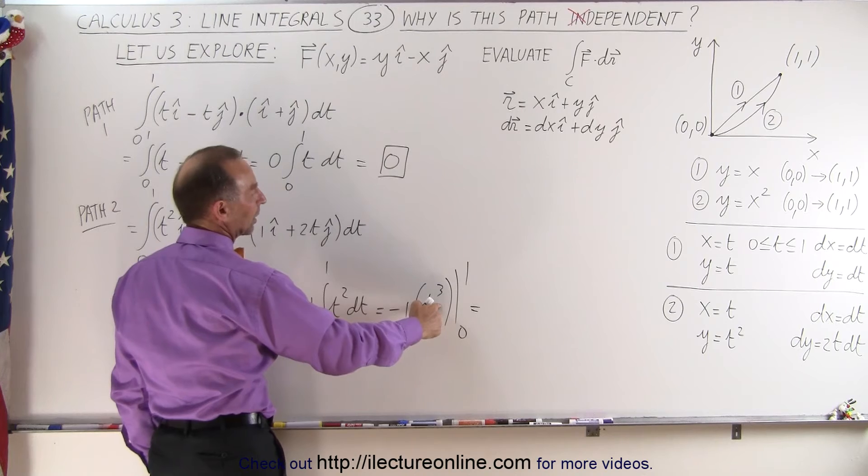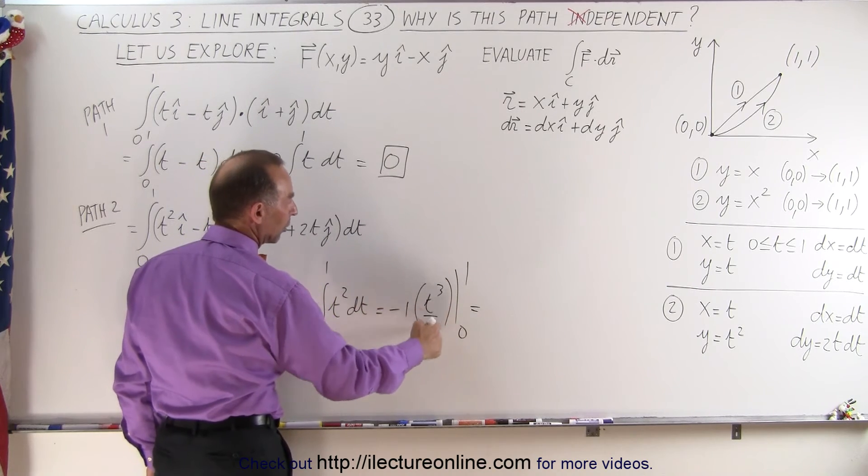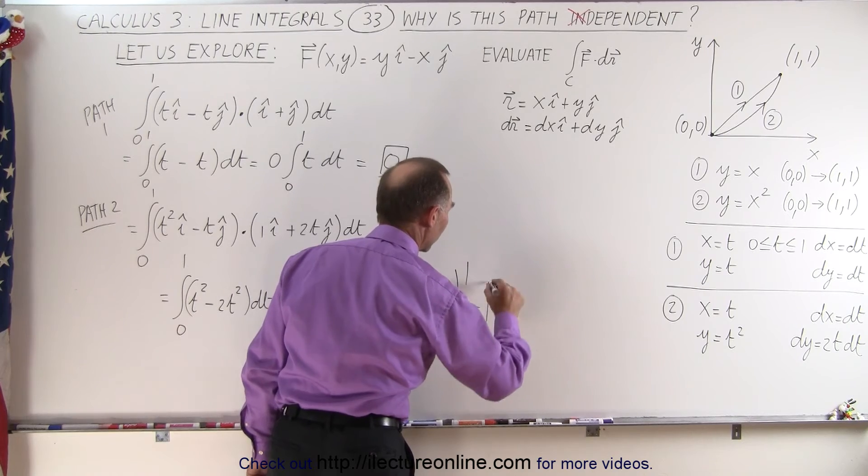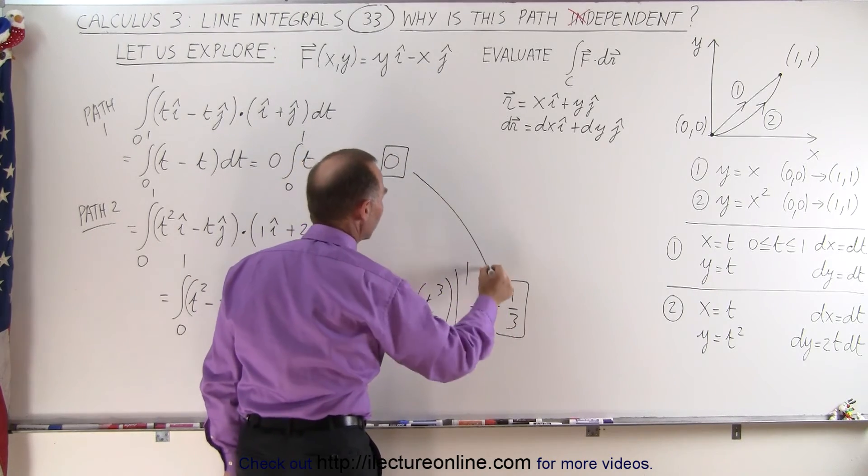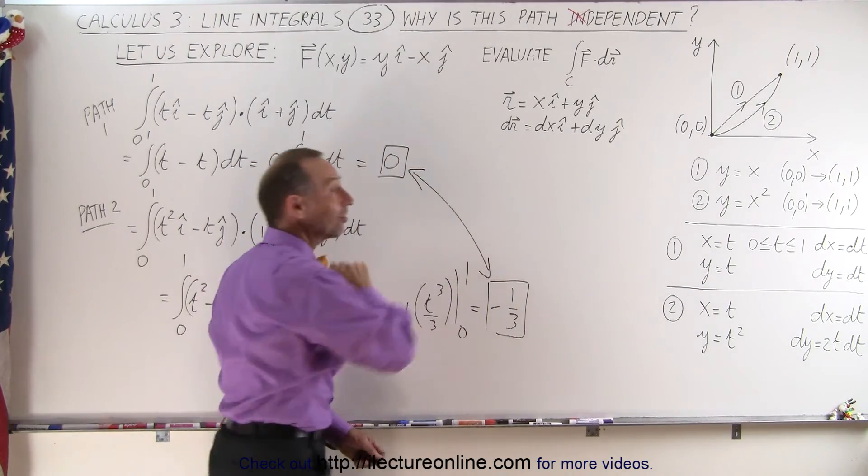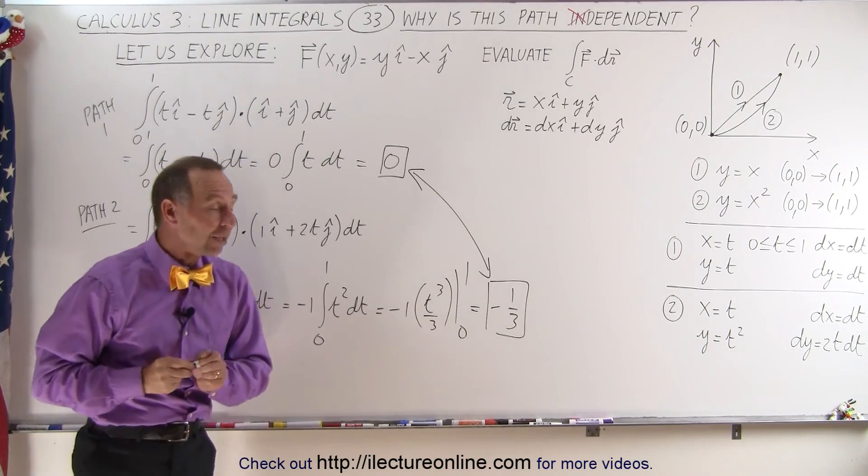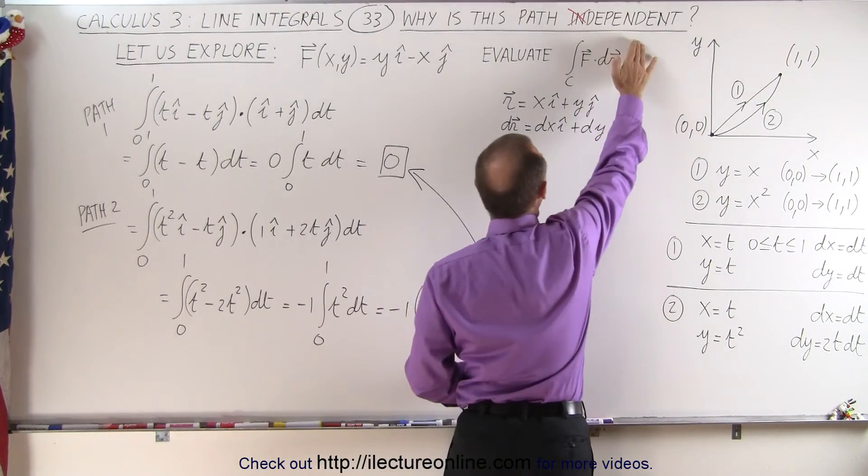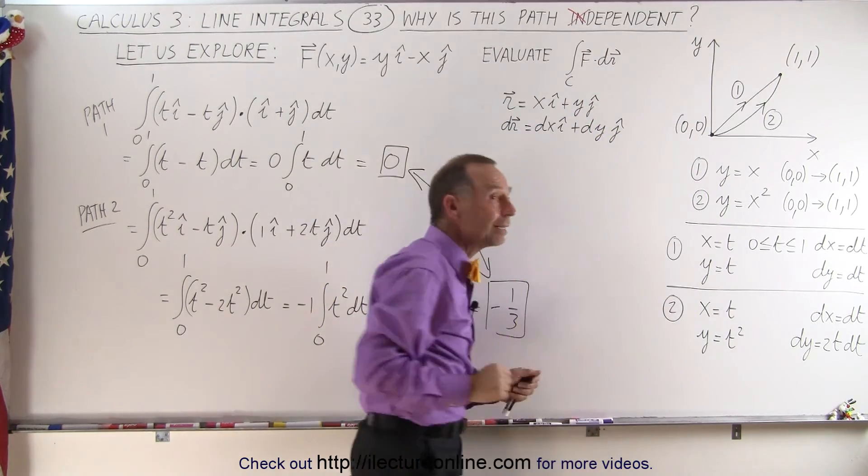which is equal to minus 1 times t cubed over 3 evaluated from 0 to 1. We plug in the lower limit we get 0, plug in the upper limit we get 1/3 times the negative 1, which is a negative 1/3. And notice that the two results are not the same. We took two different paths, we got two different answers.